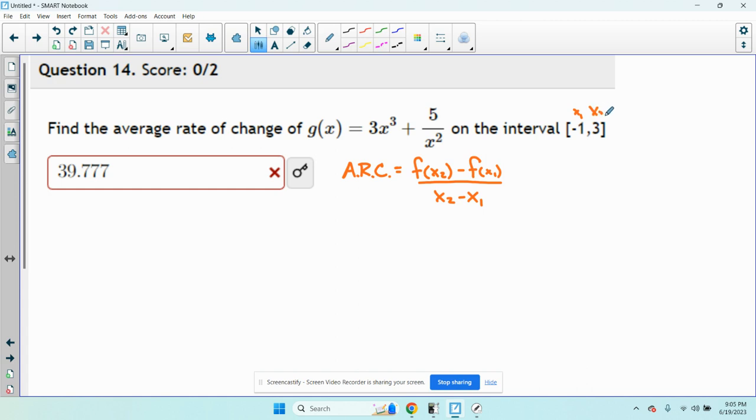x1 being negative 1 and x2 being 3. So this is just going to be equal, well we'll use g in this case. It's just going to be equal to g of 3 minus